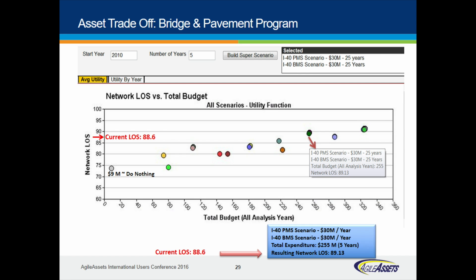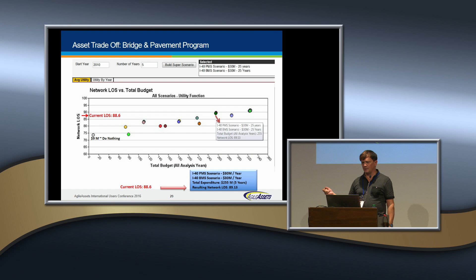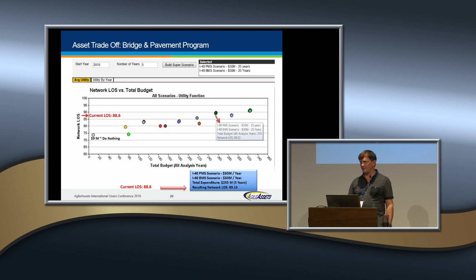What you get from asset trade-off analysis is what's called frontier performance. For a given budgeted amount for pavements and bridges, you create a super scenario that tells you where on this performance curve that scenario ends up. Some scenarios — you can see one with a little arrow — show you can actually get better performance for a lower cost when you bring a certain combination of optimized pavement and bridge scenarios together, providing a better level of service than a different scenario at a higher dollar value with a different pavement-bridge balance.